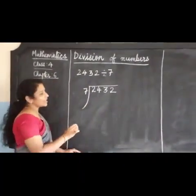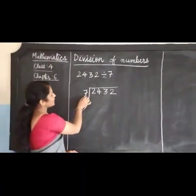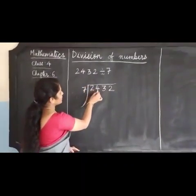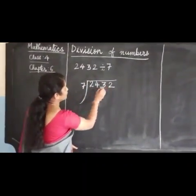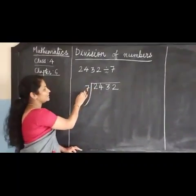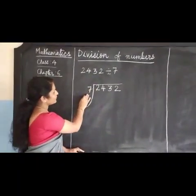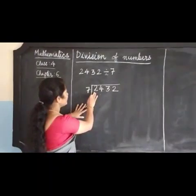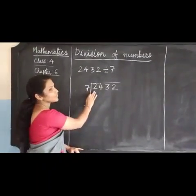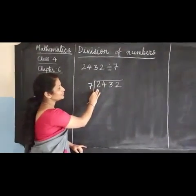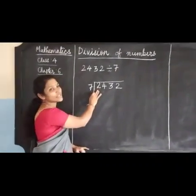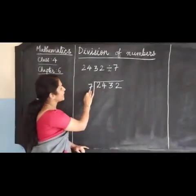We are going to see how many 7s are there in 2432. For that we have to know the table of 7. First we will see: can we take any 7 from 2? It is not possible because 2 is smaller than 7.